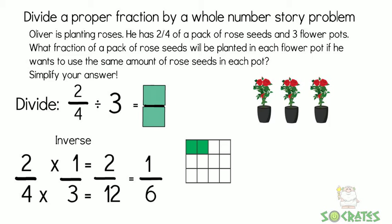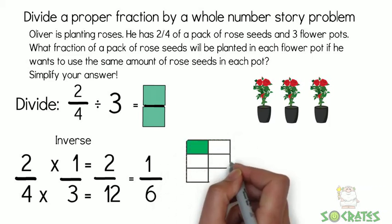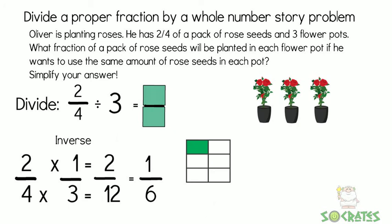And if we want to simplify that, then it can become one-sixth by dividing two and twelve both by two. So one-sixth of a pack of seeds will go in each one of the flower pots.